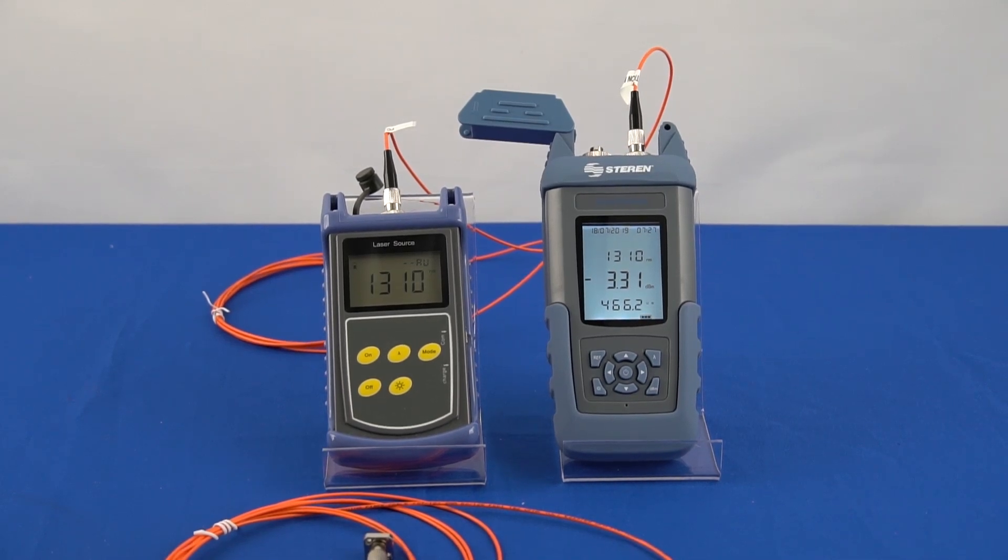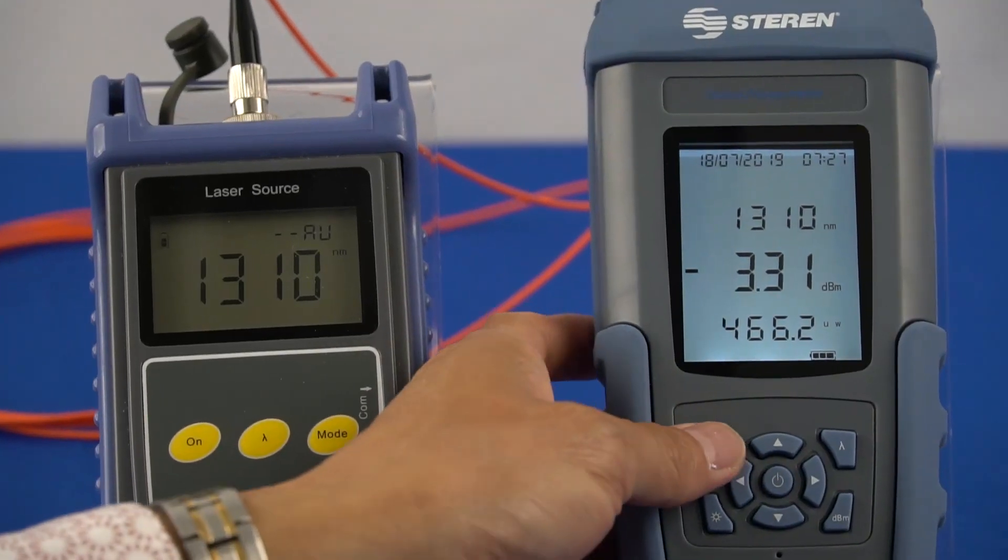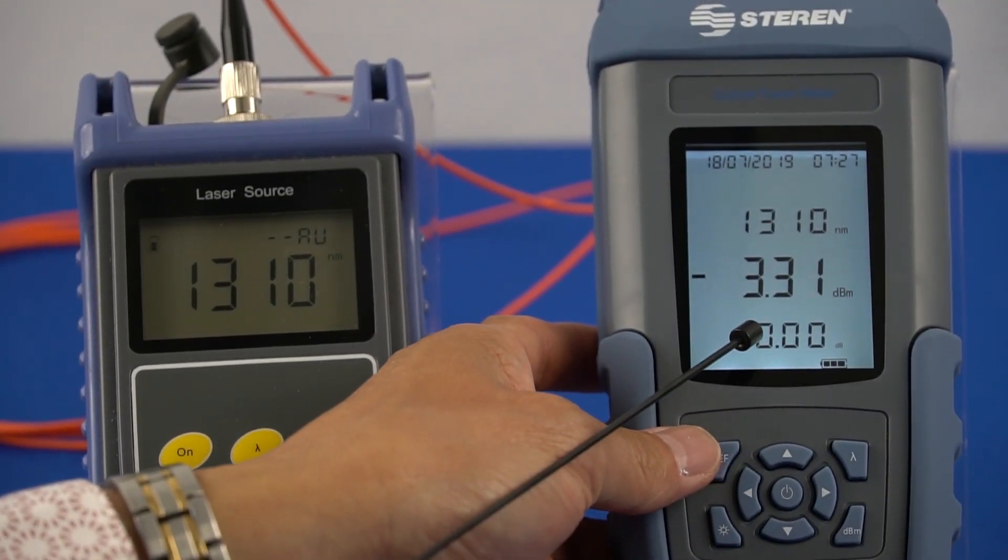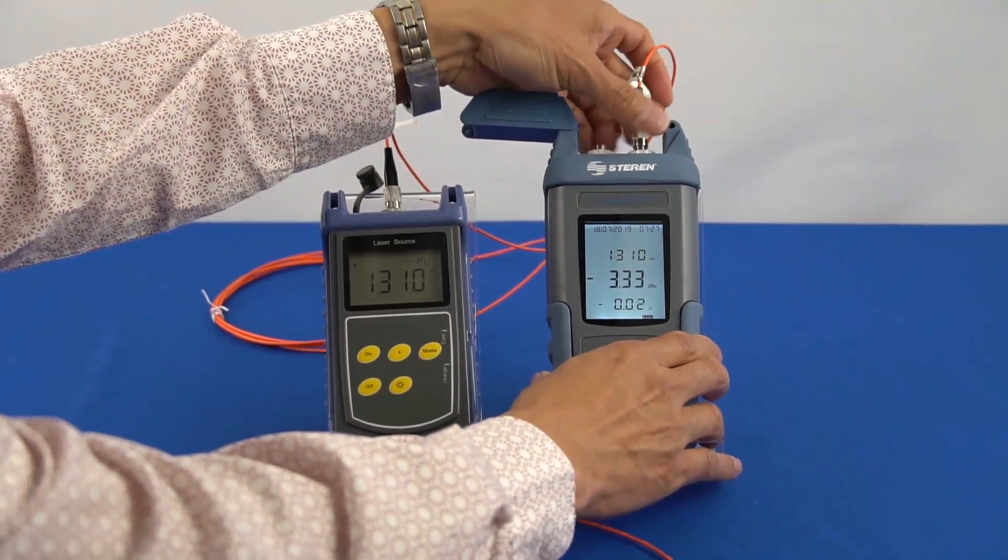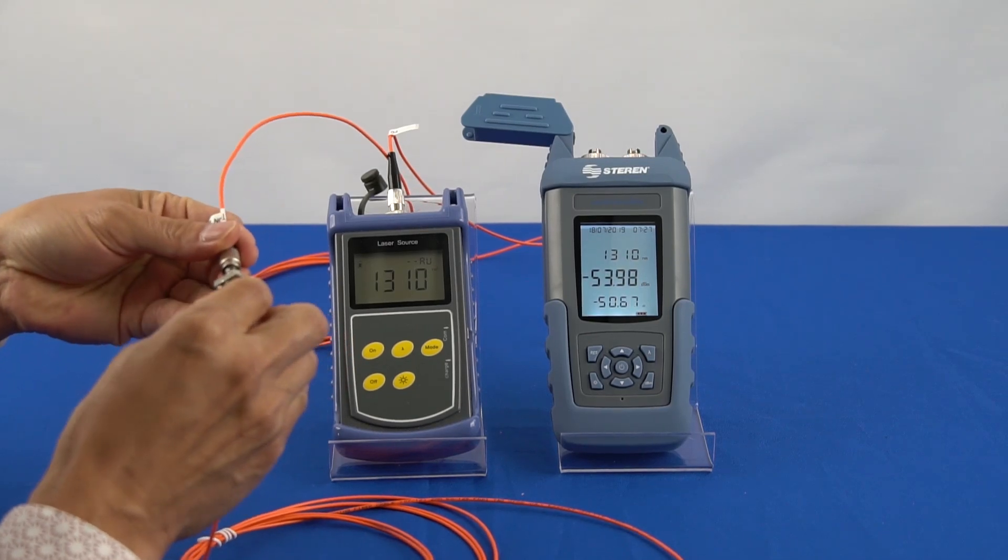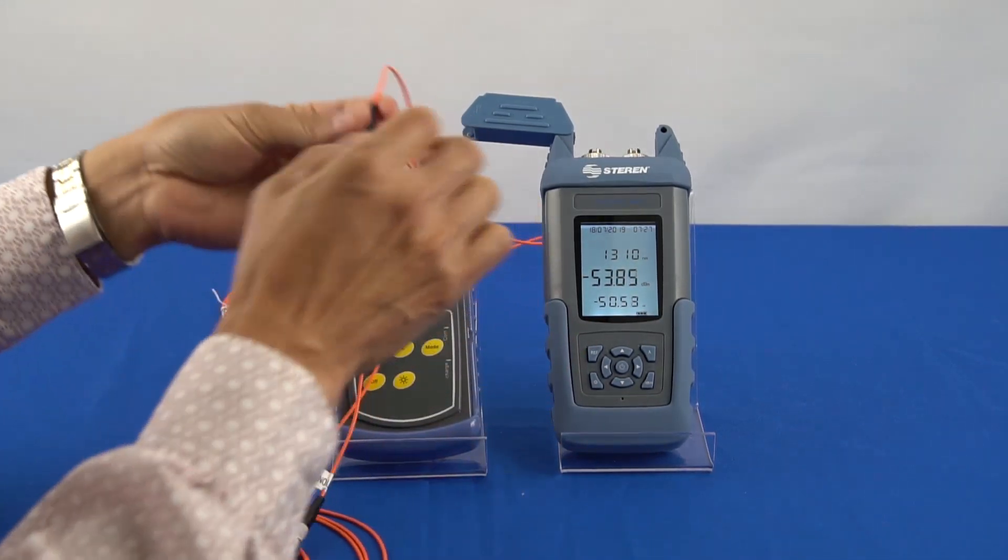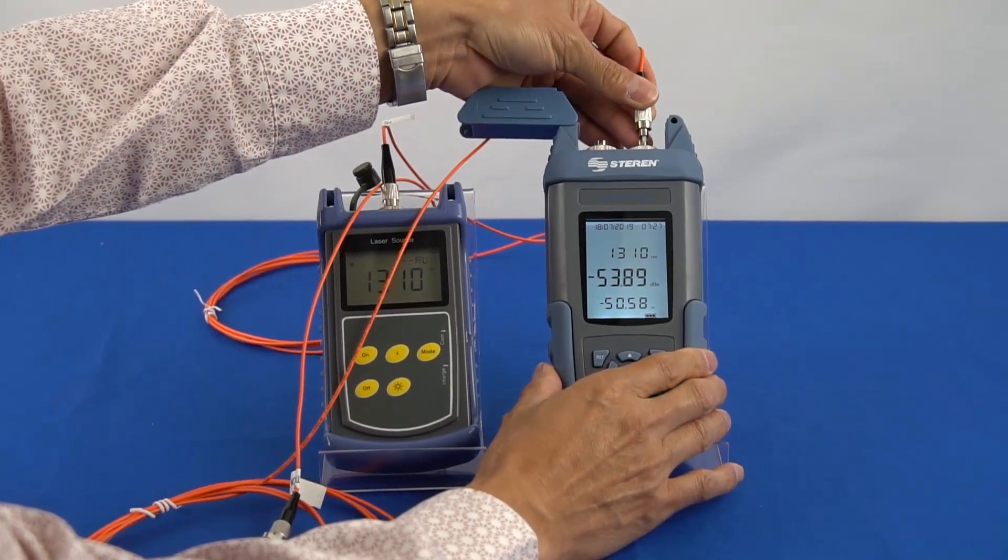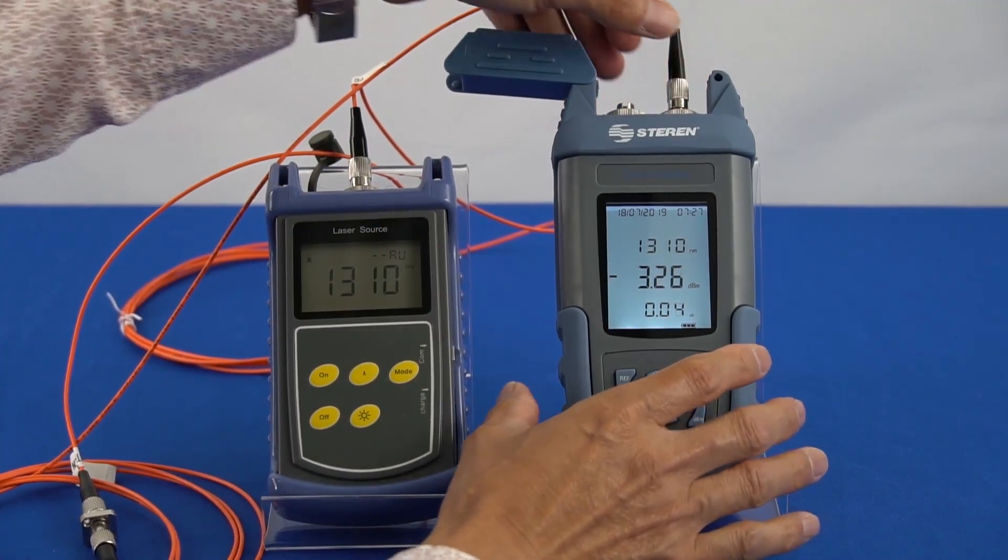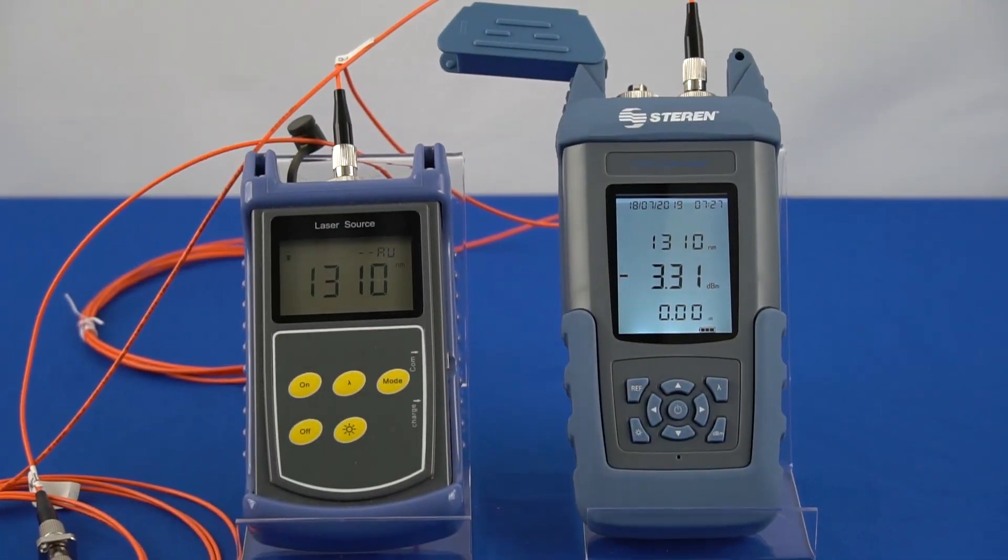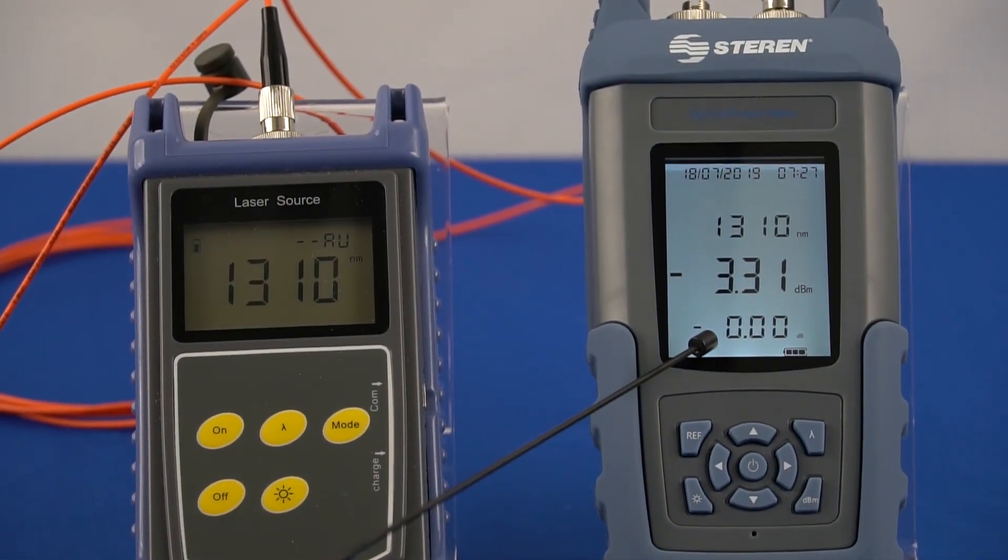Next, let's reference the value of the light source at 0 dB. You can set the reference value to 0 dB by pressing the reference button. Now we can plug in the fiber jumper cable under test by connecting one side to the adapter and the other side to the optical power meter. The optical power meter reads as 0.00 dB insertion loss, which is within tolerance of the fiber cable.